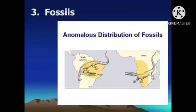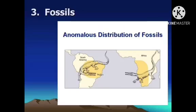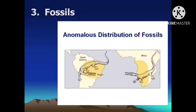The third evidence is fossils. Mesosaurus and Listosaurus are freshwater reptiles whose fossils were discovered in different continents — in South America and in Africa. It is impossible for these reptiles to swim across vast oceans from one continent to another. Fossils were also found in Antarctica. Could it be possible that they existed in this region where temperatures were very low, or could Antarctica have been in a different position long before?